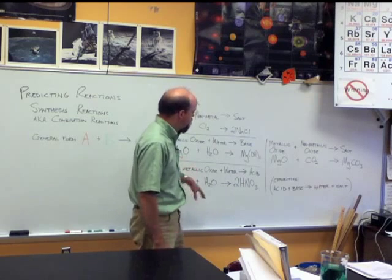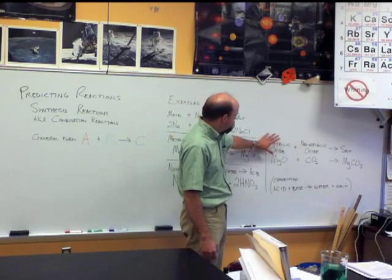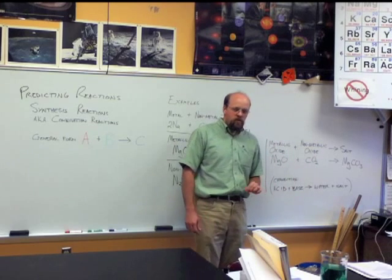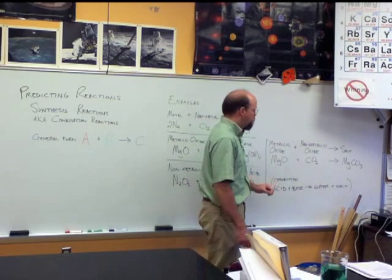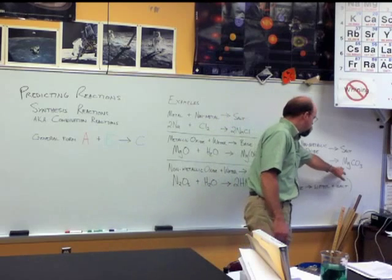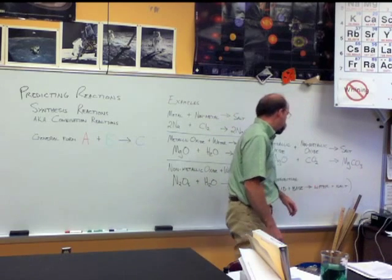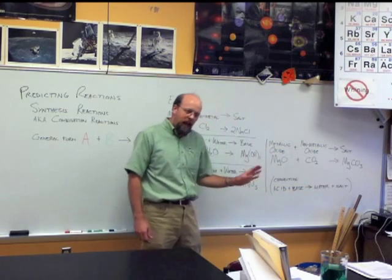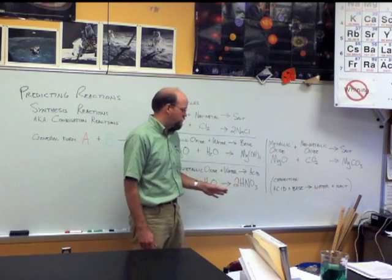Another type is when you have a metallic oxide plus a non-metallic oxide. When you combine those two things, what you end up with is a salt. In this case, magnesium carbonate is formed from the reaction of magnesium oxide and carbon dioxide. This has a connection to another type of reaction which we won't discuss in this video.